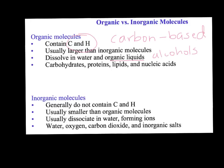The four main organic molecules we think of are carbohydrates, proteins, lipids, and nucleic acids — the things on the side of your nutrition label: carbs, proteins, fats, and then we throw in DNA as well.